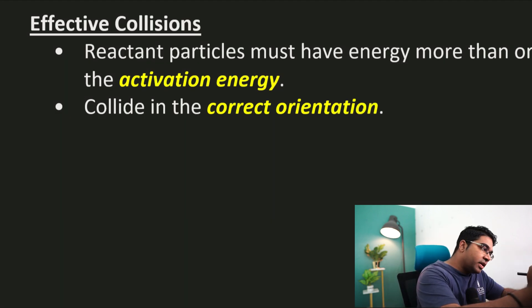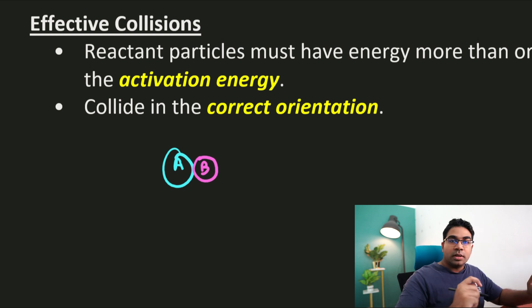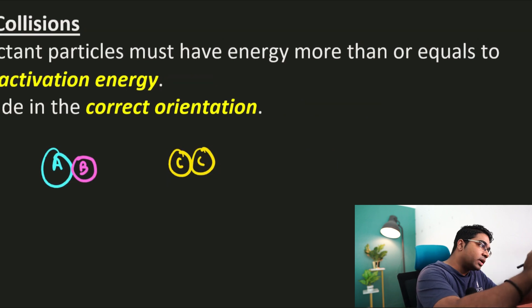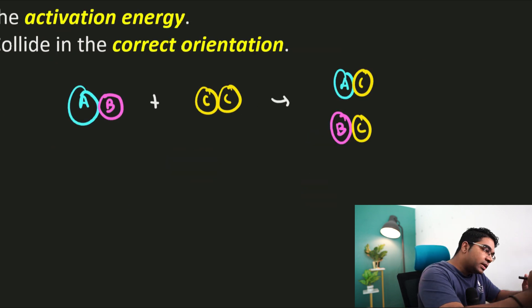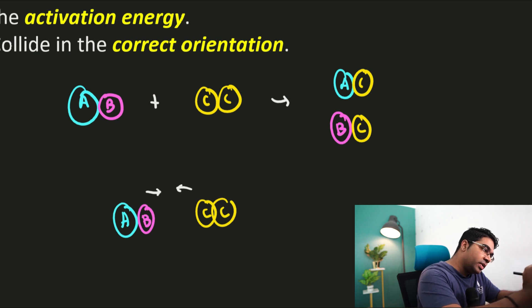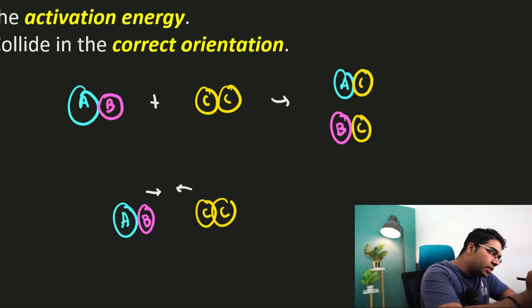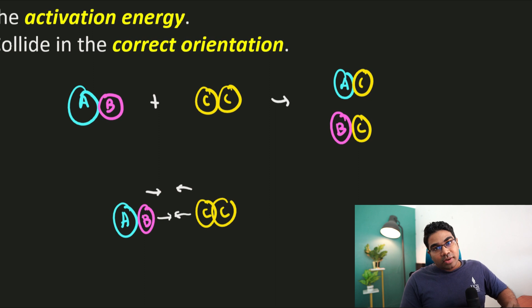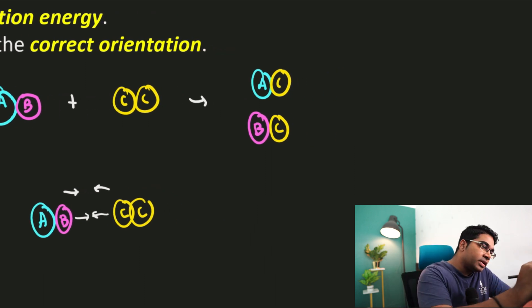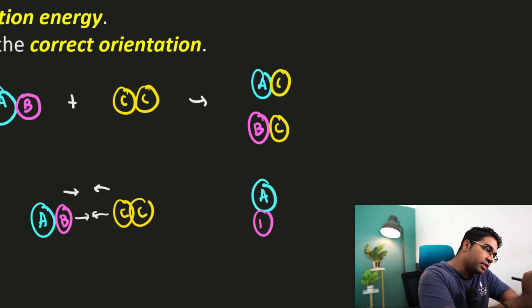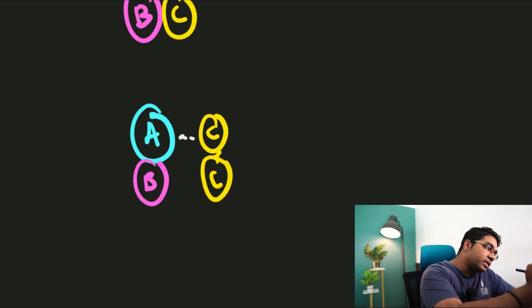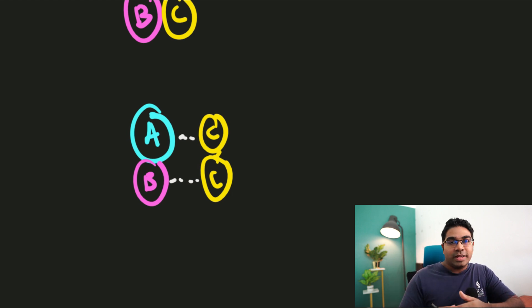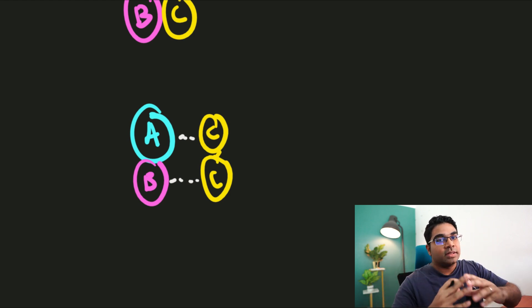Let me give you an example. Let's say we have reactant AB that is going to react with C to form products AC and BC. If reactant AB collides with C in a particular arrangement where only B and C come into contact, while A and C are not in contact, the reaction won't occur. The best position would be if A is at the top, B at the bottom, and C approaching so that both A and C, and B and C, are in contact. This arrangement is much more likely to result in product formation, so the arrangement of particles is important.